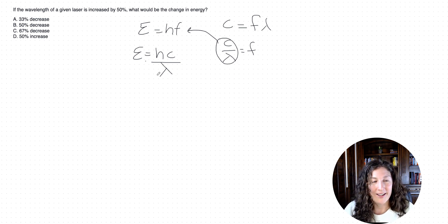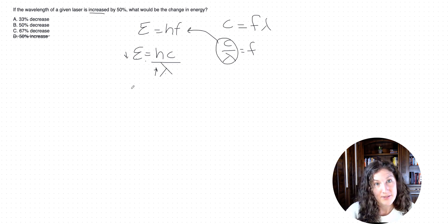So right off the bat, guys, we can start by eliminating an answer choice because we can see that we have a reciprocal relationship between wavelength and energy. As wavelength increases, energy will decrease. That's what this one over means. So we can eliminate right off the bat a direct relationship, like D. That's always a nice thing to do is check your relationships first.